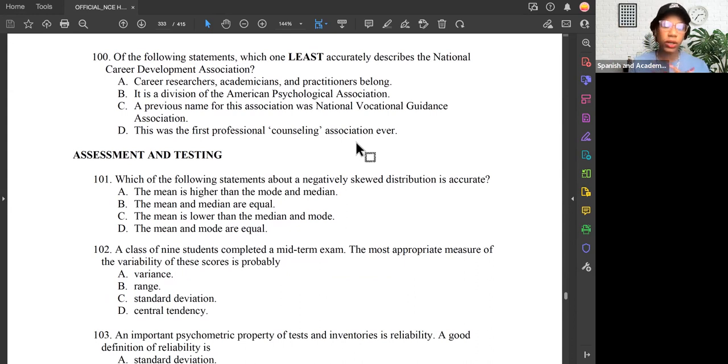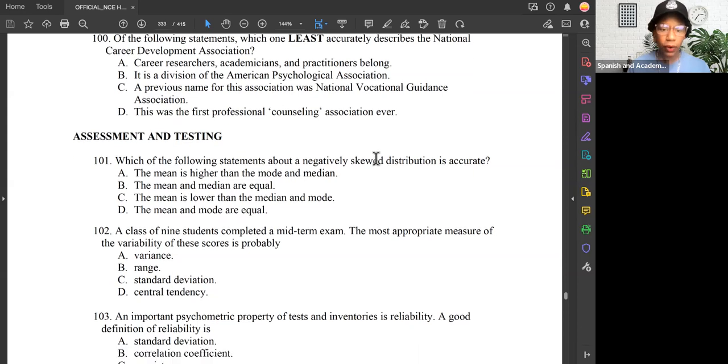Let's go to question 101. I'm here out of the Helwig book. Which of the following statements about a negatively skewed distribution is accurate? So my first note is, we're talking about a negatively skewed distribution. I know the other types of distributions are a normal bell curve or the normal distribution, as well as a positively skewed distribution.